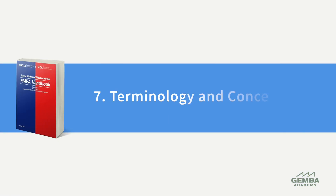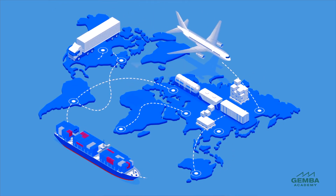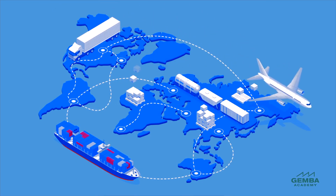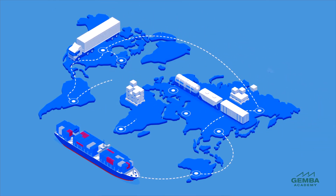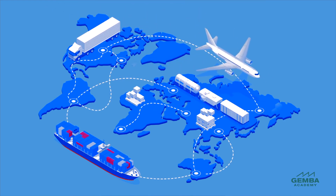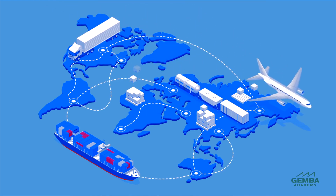The seventh change was to modify and harmonize terminology and concepts between the AIAG and the VDA approaches to FMEA. This is especially important for establishing a common understanding and application across global organizations and supply chains.